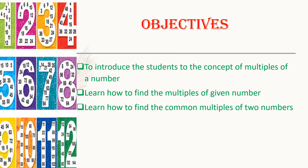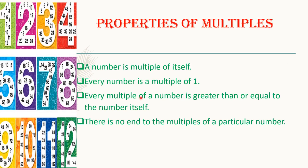Here are the objectives children. Here are the properties of multiples. A number is a multiple of itself. Every number is a multiple of 1. Every multiple of a number is greater than or equal to the number itself. And there is no end to the multiples of a particular number.